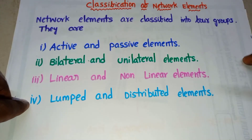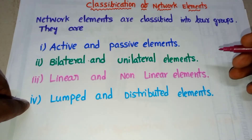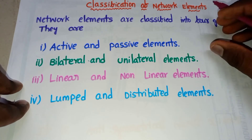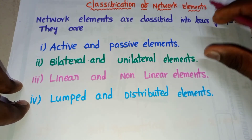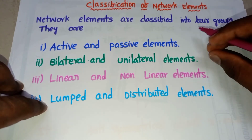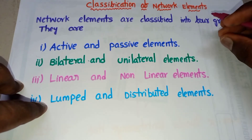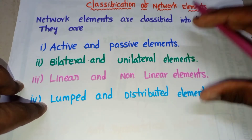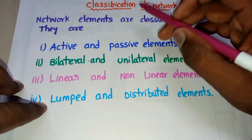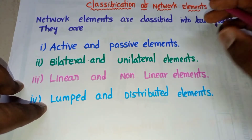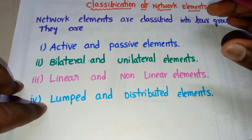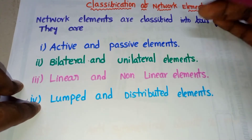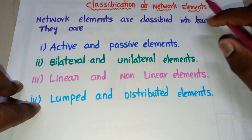Hello friends, in this video we will discuss the classification of network elements. We know in a network there are so many elements present like resistors, capacitors, inductors, voltage sources, current sources, and so on. Classification of network elements means how those elements are classified.